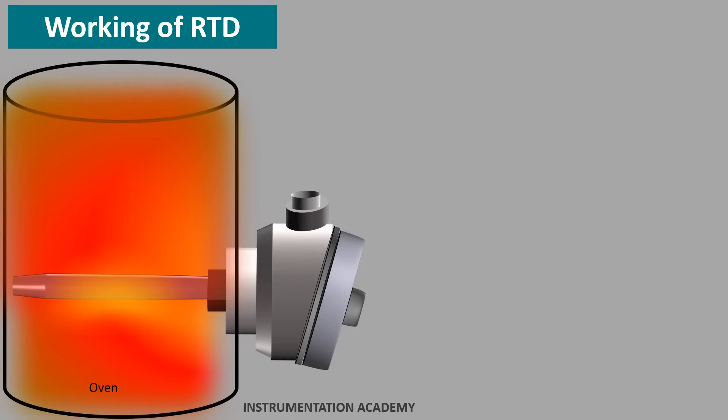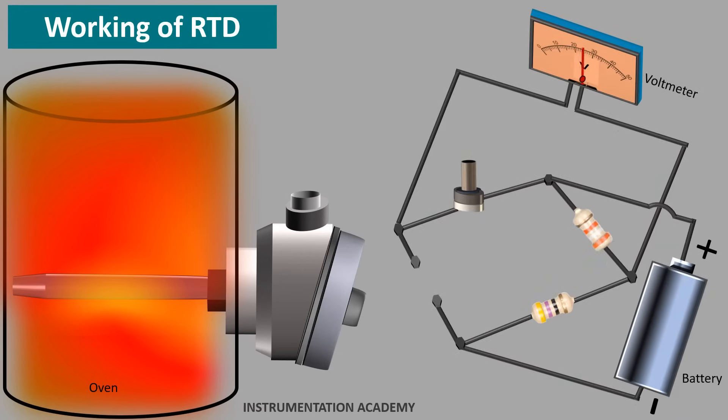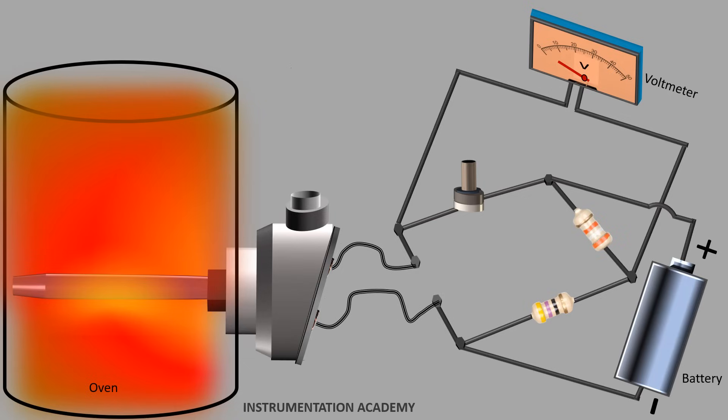So we have to convert that change in resistance to a change in voltage and this can be done using Wheatstone bridge. These Wheatstone bridge circuits are built into the transmitter, PLC, DCS or PID controller. RTD may be located hundreds of feet away from the bridge circuit.